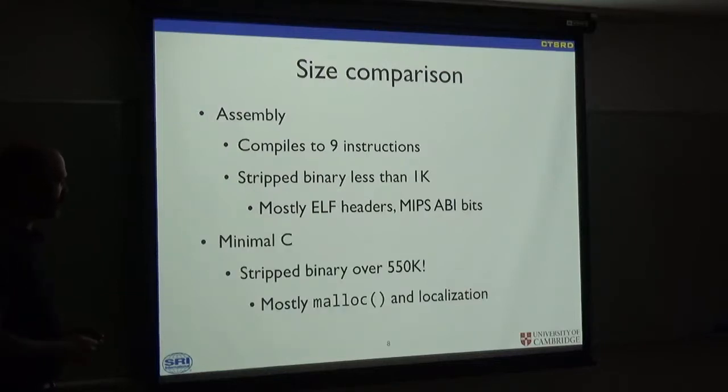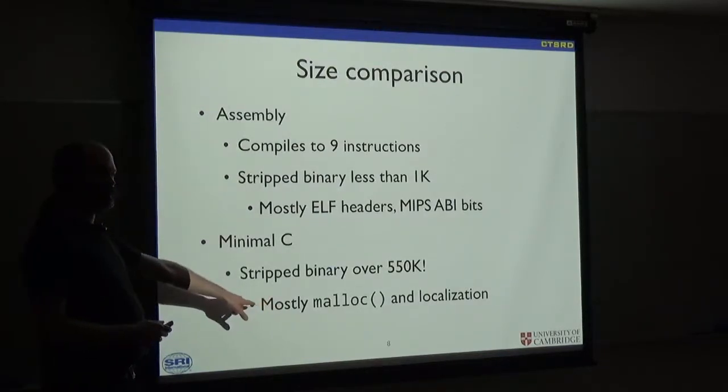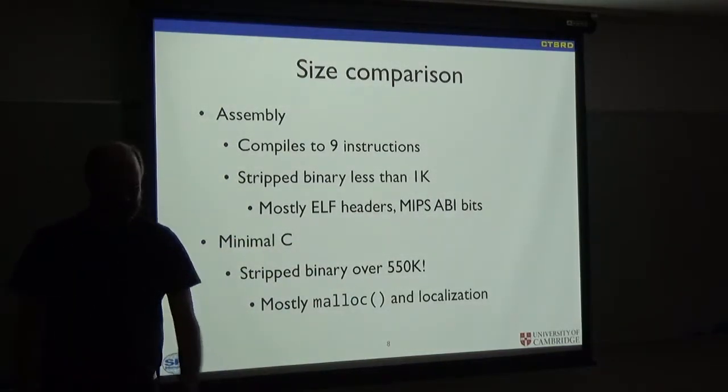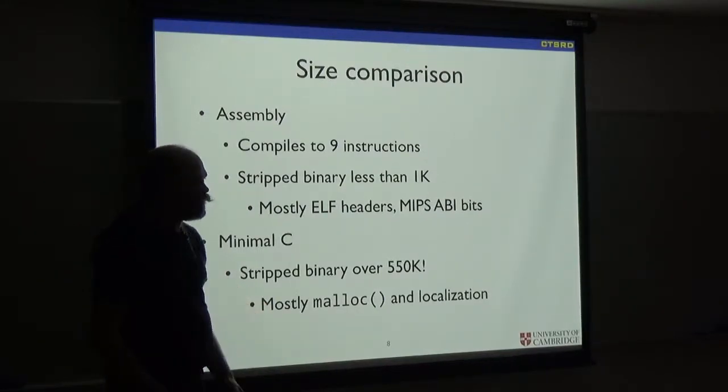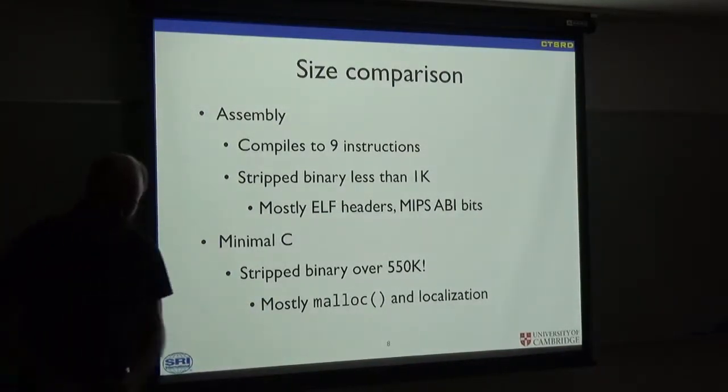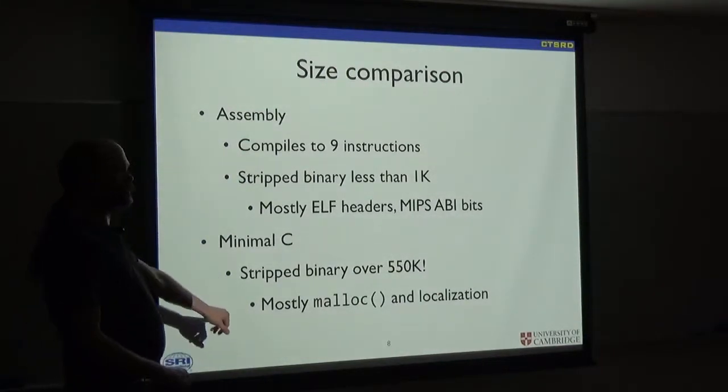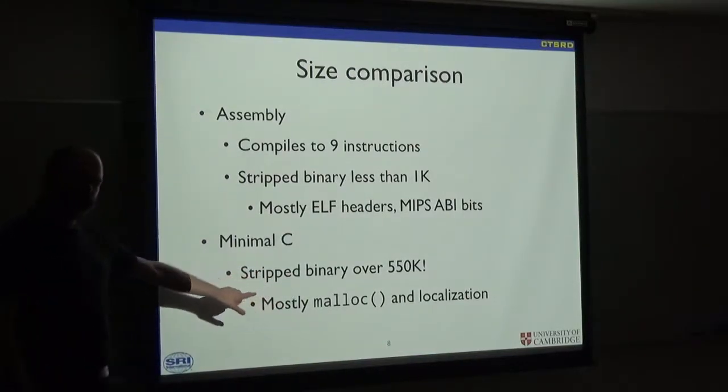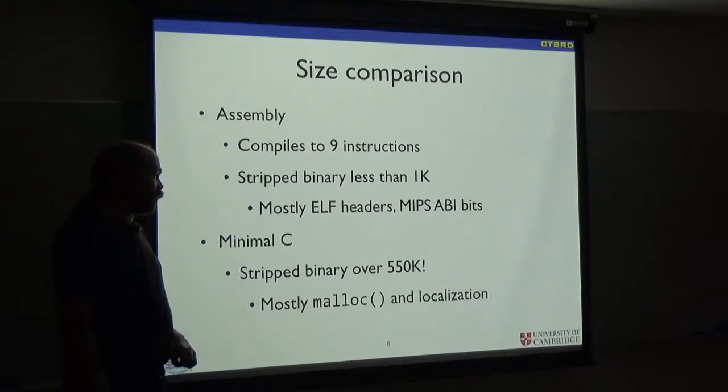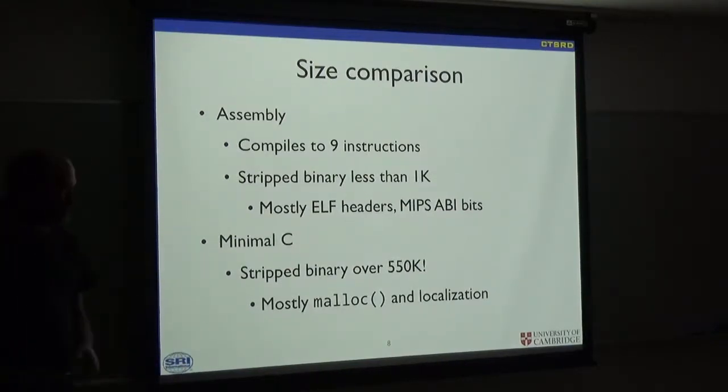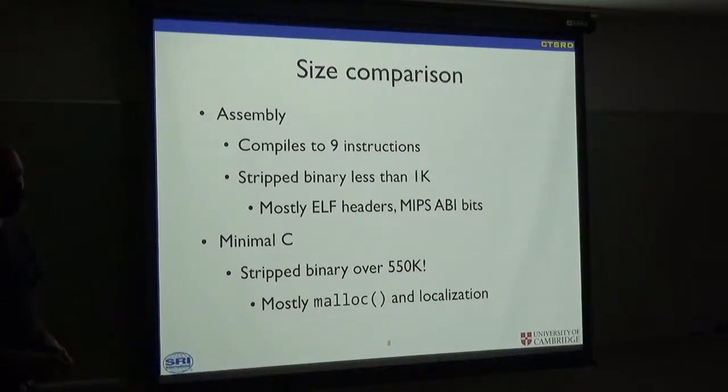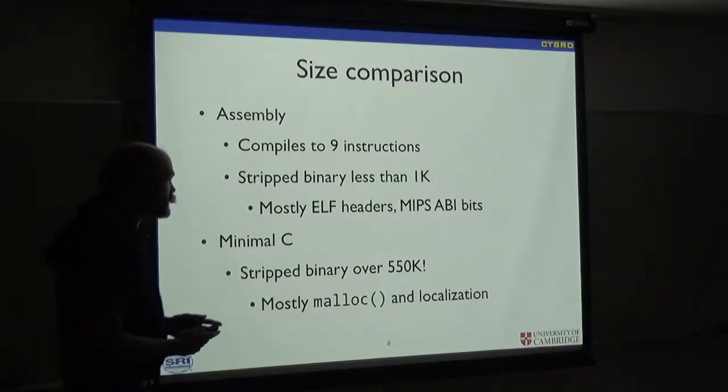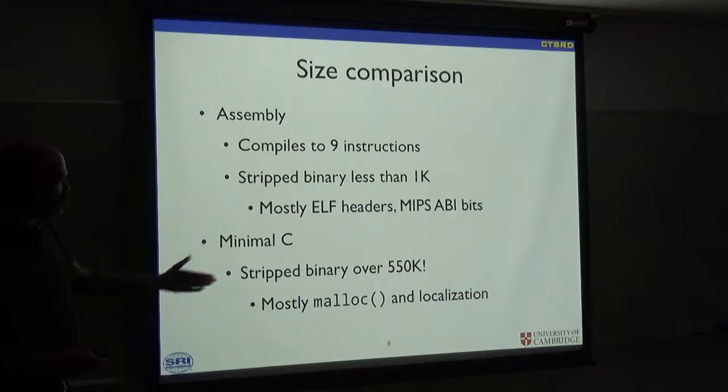Then there's the minimal C version. In FreeBSD, it's over half a megabyte stripped. Most of it turns out to be malloc and localization. But interestingly, even an empty program will be this big. Because it turns out that malloc gets called before the program starts, in all cases. And there's always an invocation somewhere hiding in the error paths.